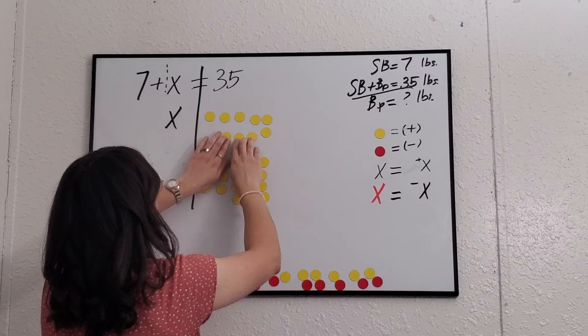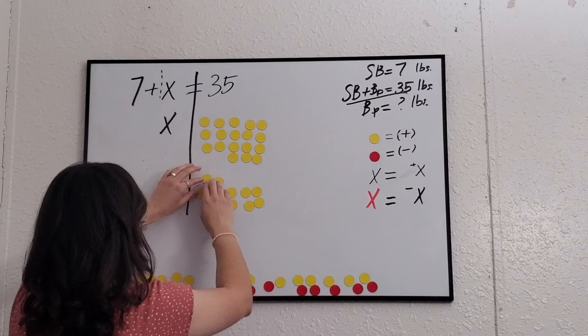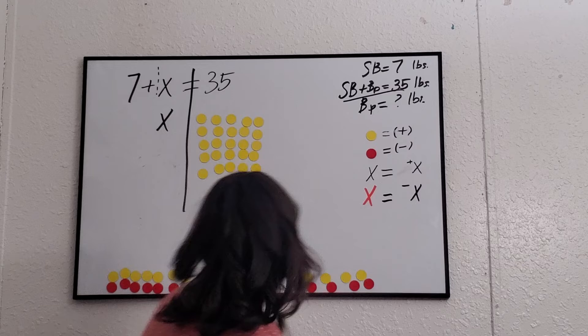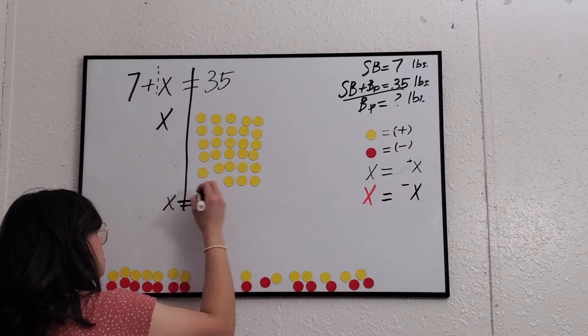Now all we have to do is count how many positive counters are left on the right side. After canceling seven, we count the remaining units and are left with 28 positive units. So x equals 28, and that is our final answer.